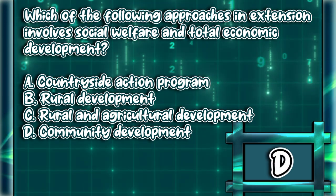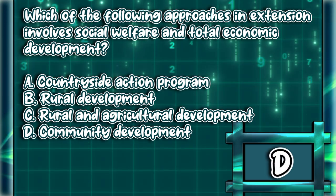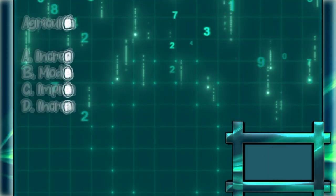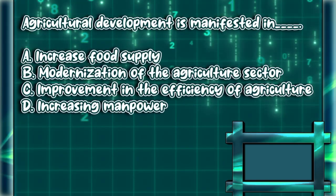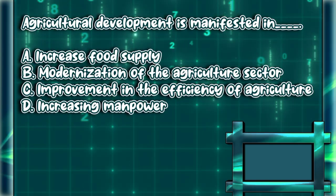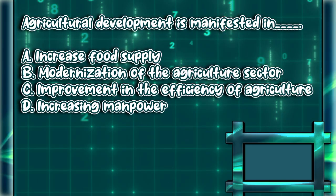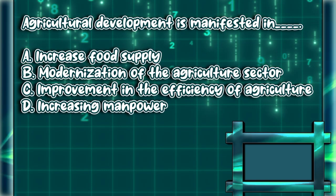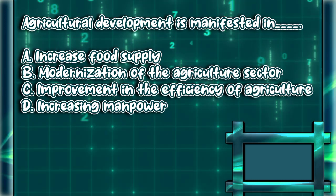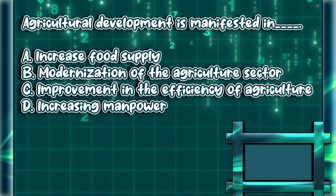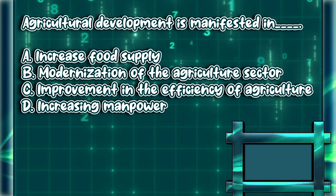The answer is letter D. Agricultural development is manifested in: A) increase food supply, B) modernization of the agriculture sector, C) improvement in the efficiency of agriculture, D) increasing manpower.